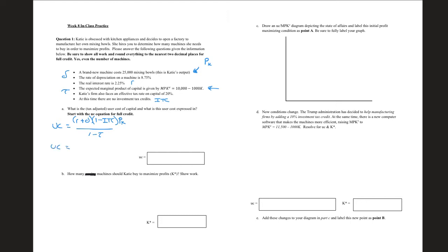And so what we have to do is we have to just plug these numbers in. The user cost of capital equals, if I take r plus delta, I get 0.11, 11%. ITC is 0, so that's a 1. The price of capital is 25,000 mixing bowls. And we divide that by 1 minus tau, which would be 0.8, right? Because it'd be 1 minus 0.2. We do all of that math out, and we get 3437.5 mixing bowls.